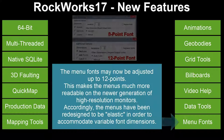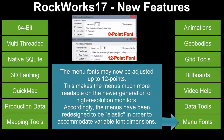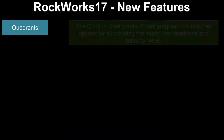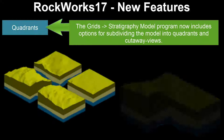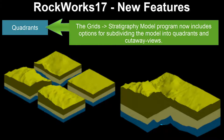The menu fonts may now be adjusted up to 12 points, making the menus much more readable on the newer generation of high-resolution monitors. Accordingly, the menus have been redesigned to be elastic in order to accommodate variable font dimensions. The Grids to Stratigraphy model program now includes options for subdividing the model into quadrants and cutaway views.